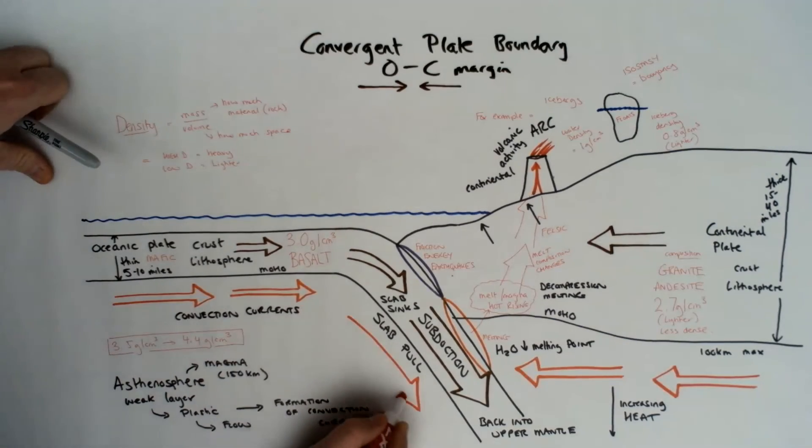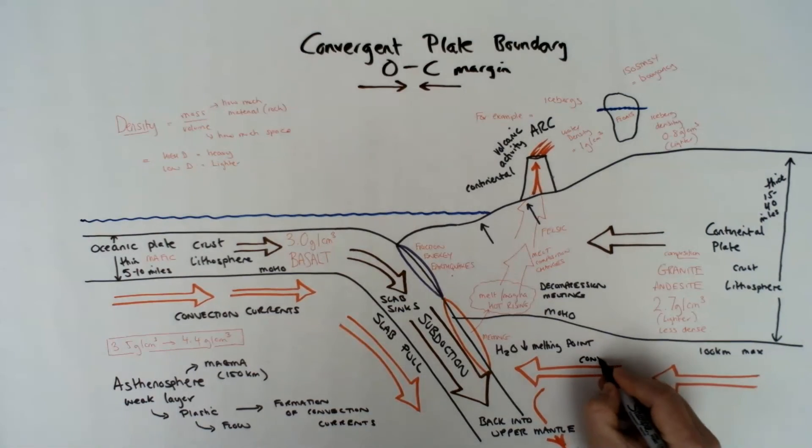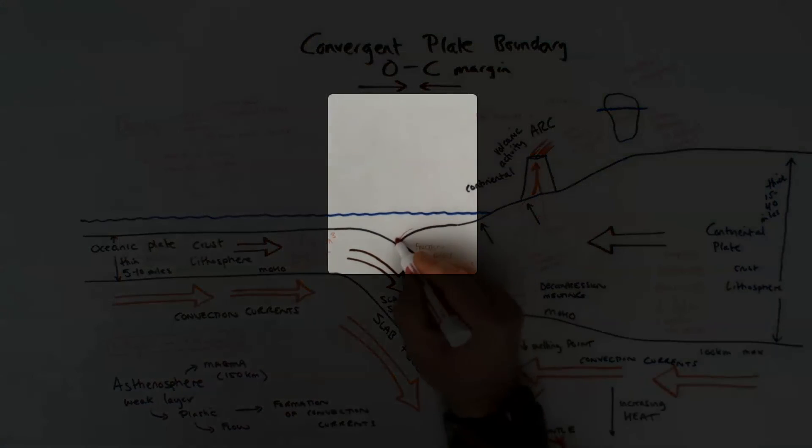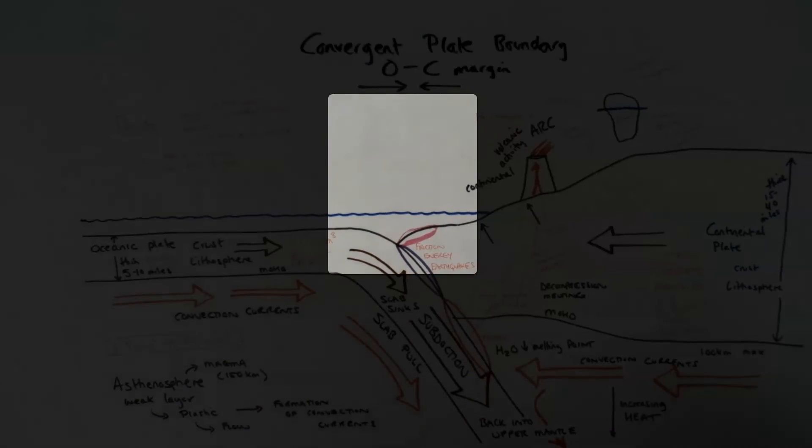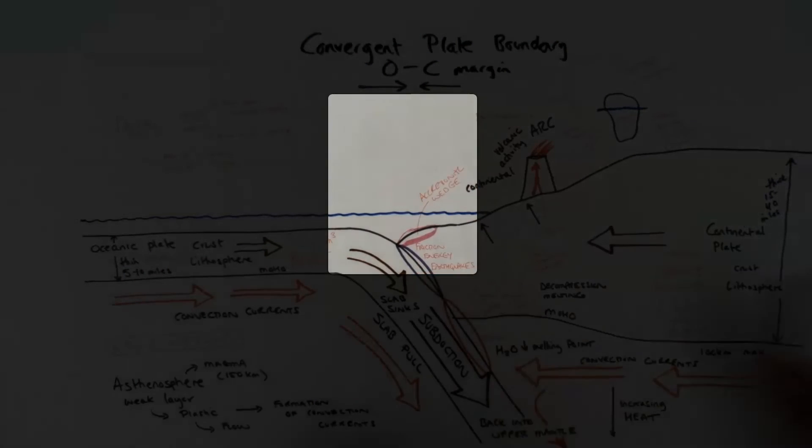So two features are also formed from the subducting oceanic plate, which is going to be the ocean trench, which is going to be off the coast. And it's the point where the subducting plate starts to dive down through slab pull and form a deep part of the ocean. And then you have accretional wedge, which is part of the oceanic plate being scraped off and added onto the edge of the continental plate.